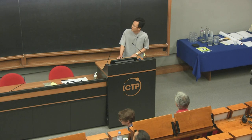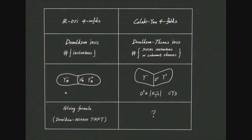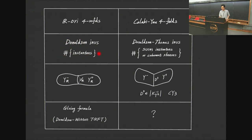Let me first recall four-manifold Donaldson theories. We start with real-oriented closed four-manifolds and consider Donaldson invariants, which count so-called instantons or anti-self-dual connections on these four-manifolds. We can consider the four-manifold decomposed into a union of two four-manifolds with boundary along D, and consider the gluing formula, which relates the relative invariants and the Donaldson invariants on closed four-manifolds, fitting into the Donaldson-Witten TQFT structure.